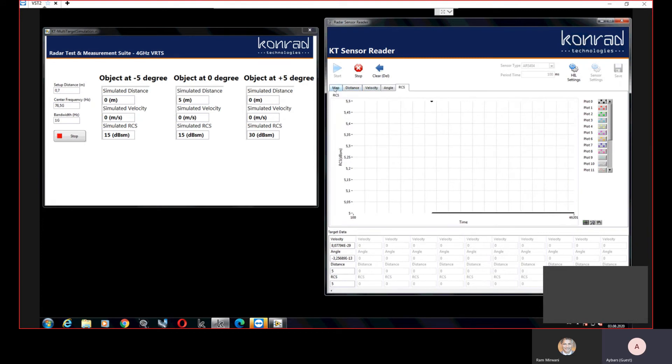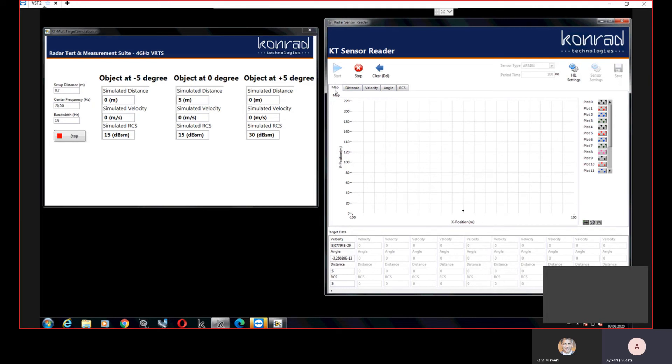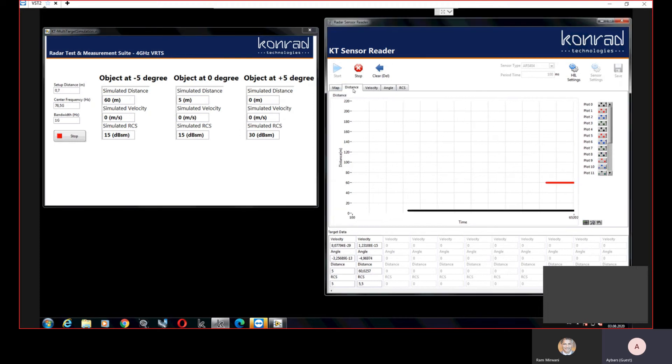Now I like to add another target in our simulation which will be at minus five degree and 60 meters. Now I go to simulated distance and now it is also detected by the sensor and it can be seen in our X and Y plot and each subplot.